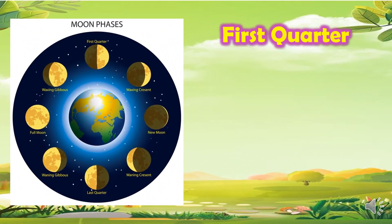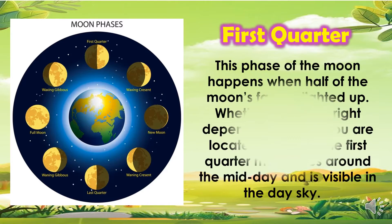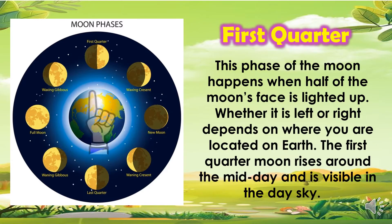Another phase is the first quarter. This phase of the moon happens when half of the moon's face is lighted up. Whether it is left or right depends on where you are located on Earth. The first quarter moon rises around midday and is visible in the daytime.